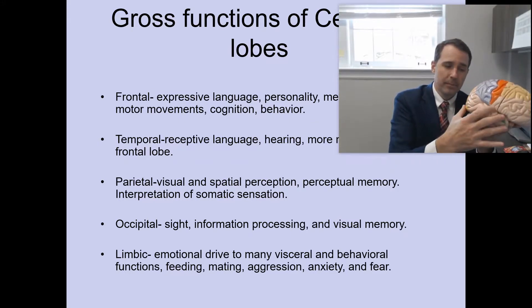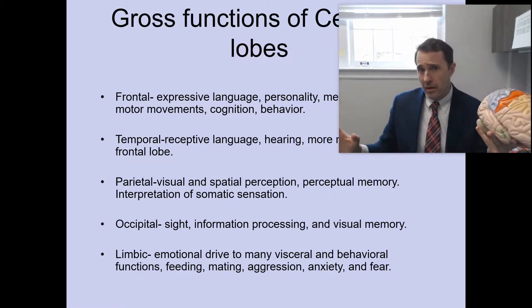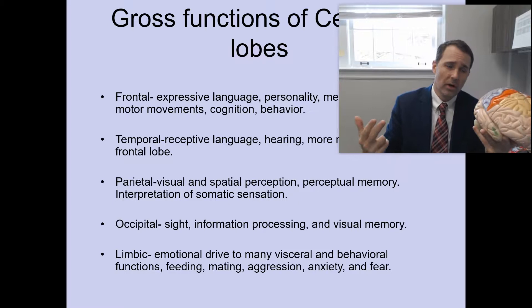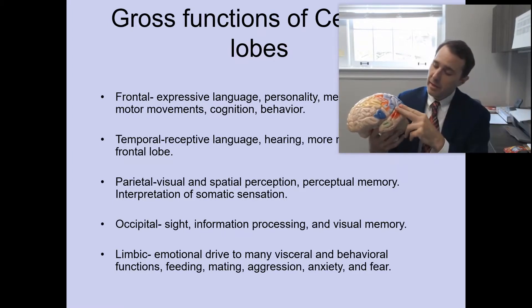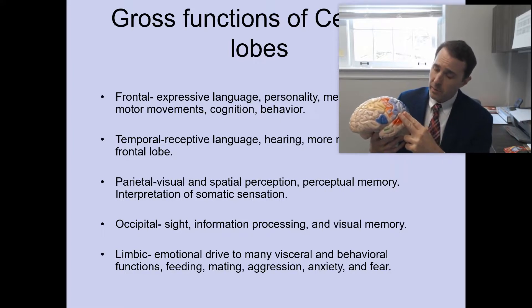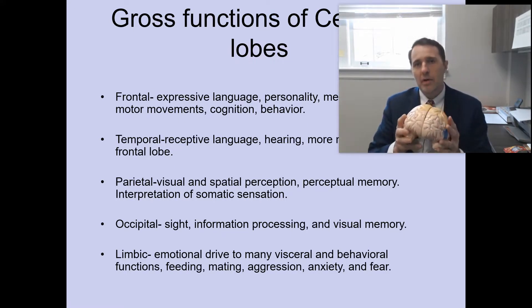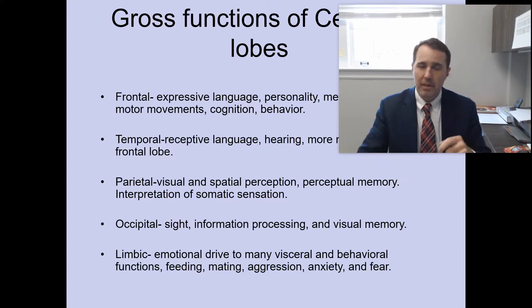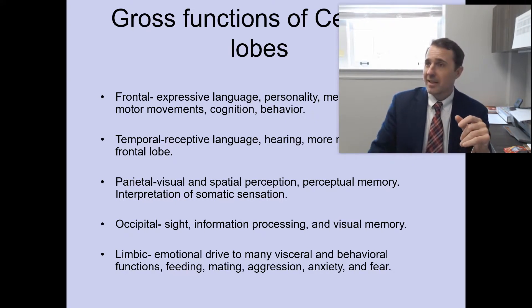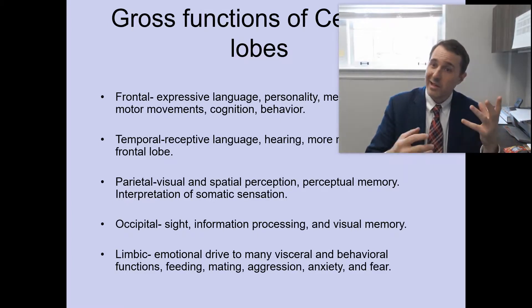Your temporal lobes are where hearing takes place. The electrical signals from the cochlea travel along the auditory nerve up to the temporal lobes. Specifically, the left temporal lobe handles reception of auditory language — processing of language that you hear. The temporal lobes are also the primary location in your brain for memory, because each temporal lobe contains a structure known as the hippocampus — the hippocampi — which takes what you experience and turns it into a memory. So it's the temporal lobes that create most of your memories.